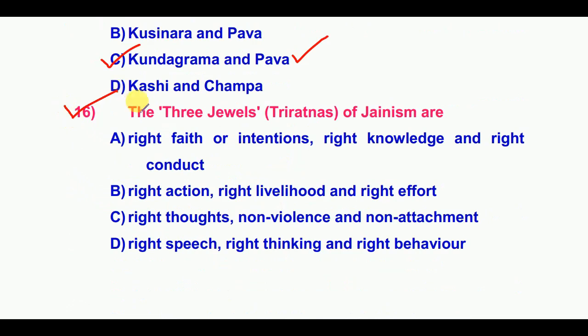The three jewels, or Tri-Ratnas, of Jainism: the answer to the sixteenth question is option A — Right faith or right intentions, right knowledge, and right conduct.